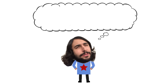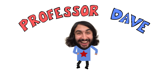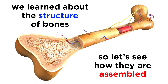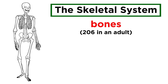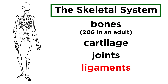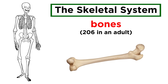Professor Dave again. Let's look at the human skeleton. Now that we've learned about the structure of bones, we are ready to take a look at how they are assembled in the body. The skeletal system is comprised mainly of bones, around 206 of them in an adult to be specific, but there is also a good amount of cartilage, joints, and ligaments, which altogether make up around 20% of a person's body mass. We will get to joints a little bit later; first let's check out all the different bones in the body.